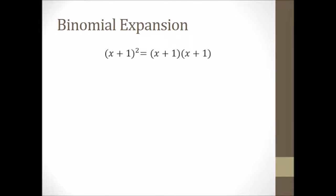Now, binomial expansion means that you can take a two-term problem and expand it into a larger set of terms. So if you see X plus something or X minus something, the power tells you to repeat it. So X plus 1 squared means you're doing it twice — X plus 1 times X plus 1. From here, just FOIL that out: first, outside, inside, last — and put it together to get X squared plus 2X plus 1.